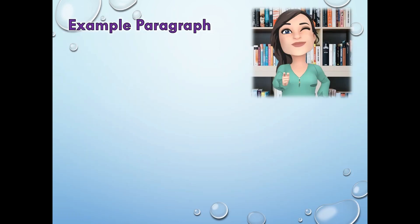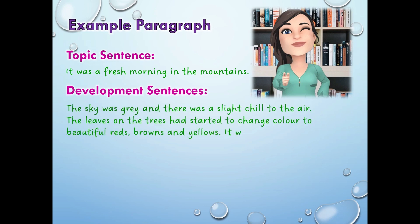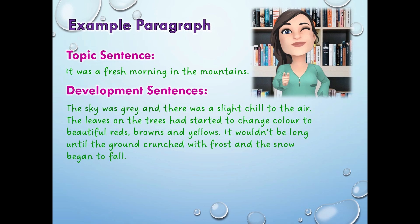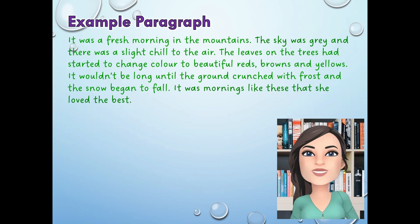Let's look at an example. For the topic sentence I have written: 'It was a fresh morning in the mountains.' For my development sentences: 'The sky was grey and there was a slight chill to the air. The leaves on the trees had started to change colour to beautiful reds, browns and yellows. It wouldn't be long until the ground crunched with frost and the snow began to fall.' Finally, my concluding sentence: 'It was mornings like these that she loved the best.' Here we have a complete paragraph, just separated into its different components. This is how the paragraph would appear when not separated — we still have the topic sentence, development sentences, and concluding sentence.